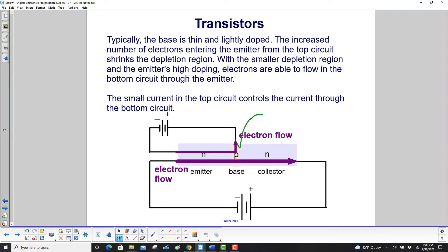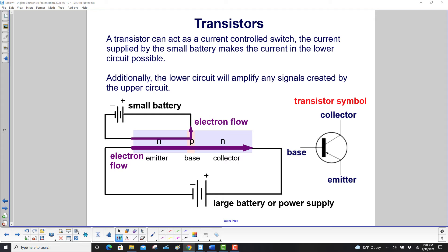Typically, the base is thin and lightly doped. The increased number of electrons entering the emitter from the top circuit shrinks the depletion region. With the smaller depletion region and the emitter's high doping, electrons are able to flow in the bottom circuit through the emitter. A small current in the top circuit controls how much current flows through the bottom circuit. A transistor can act as a current-controlled switch, where the current supplied by the small battery makes the current in the lower circuit possible. Additionally, the lower circuit will amplify any signals created by the upper circuit, because a small electron flow will increase the electron flow from the battery by shrinking the depletion region.